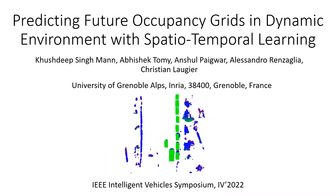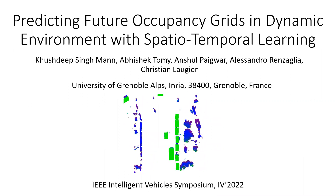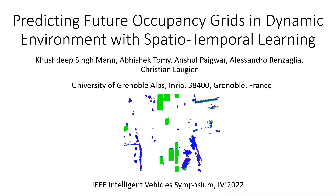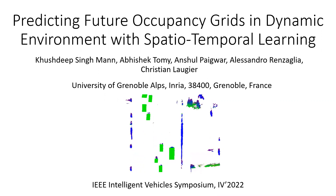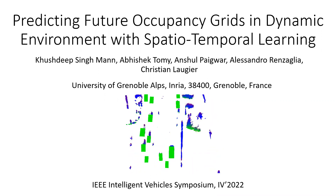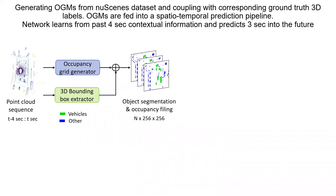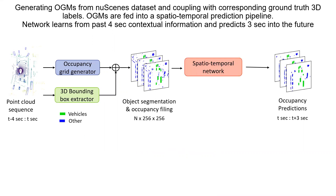My name is Kushdeep Singh. I am introducing our paper on predicting future occupancy grids in dynamic environments with spatial-temporal learning. We generate occupancy grid maps from the nuScenes dataset and superimpose the corresponding 3D bounding boxes. Then we pass these grids into a spatial-temporal network to generate future three-second predictions.